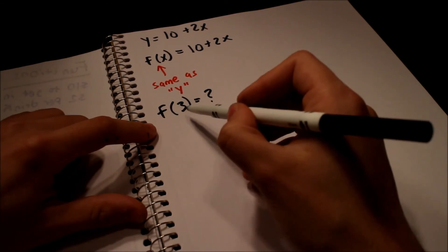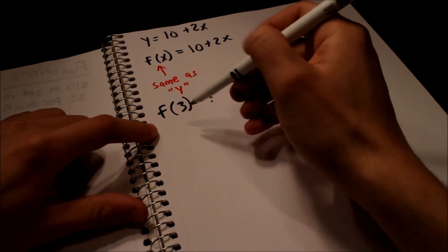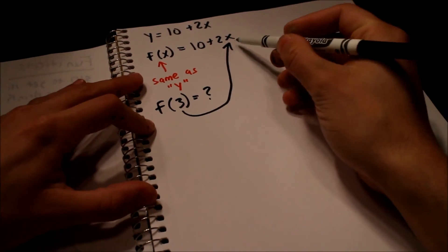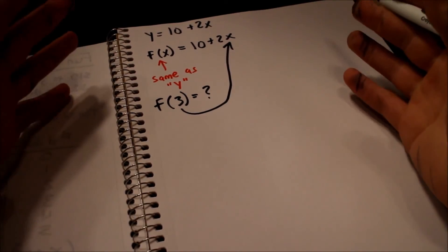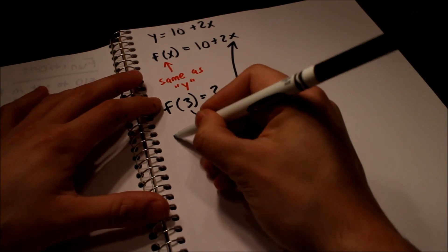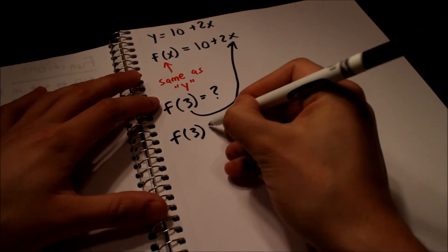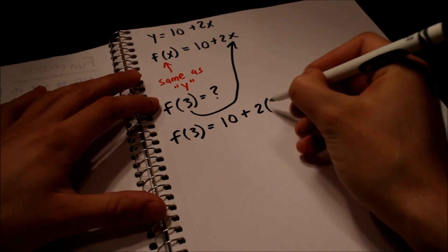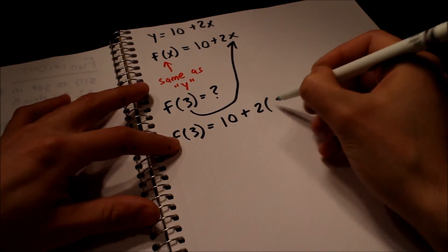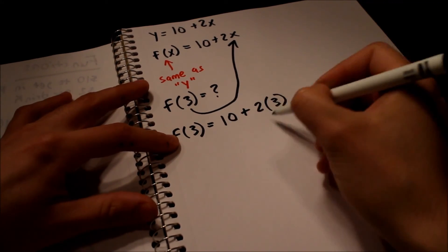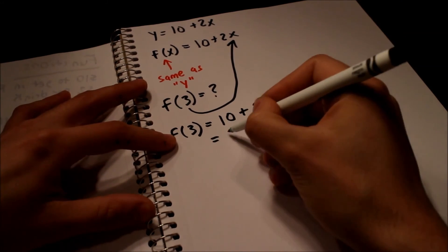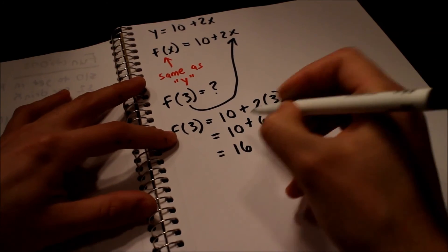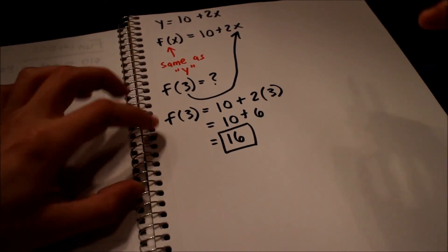They're basically saying, hey, if you input a three, if you put that into the x in this equation, what will the result be? What's the y value going to be? So f of three, this would equal ten plus two times the input. The input is three, right? So ten plus two times three, this equals ten plus six, which equals sixteen. That would be our answer. So that's just another way they can write it.